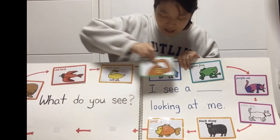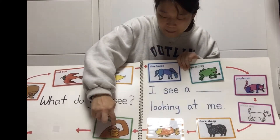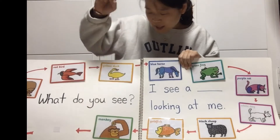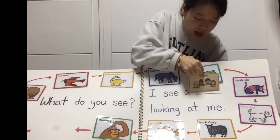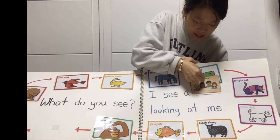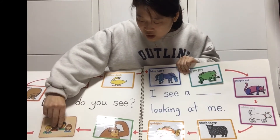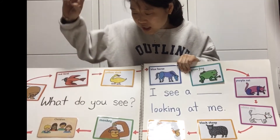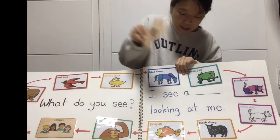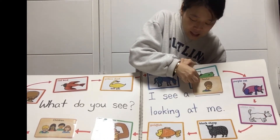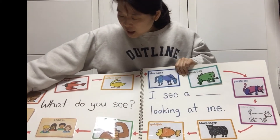I see a monkey looking at me. Monkey, monkey, what do you see? I see children looking at me. Children, children, who do you see?